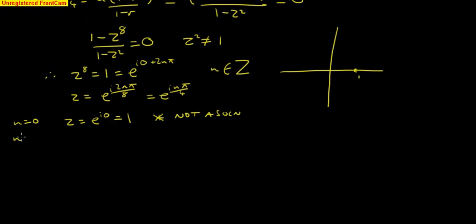Let's try n equals 1. z equals e to the i pi by 4. And that should be okay. n equals 2. We get z equals e, 2 pi by 4 is pi by 2, i pi by 2. And pi by 2 is 90 degrees. That's just i, because pi by 2 takes us up to here.